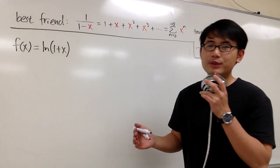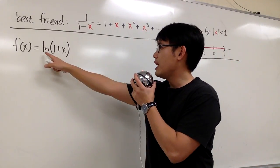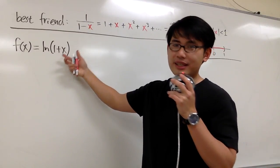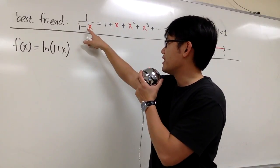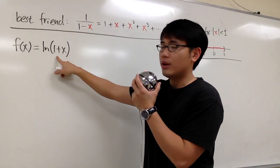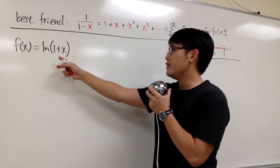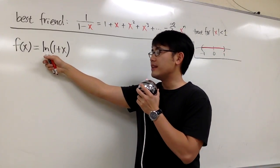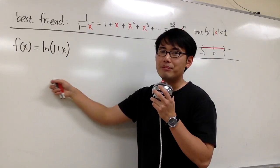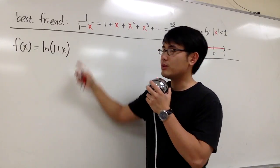Let's come up with a power series expansion for the function ln(1+x). The question is how can we make a connection with our best friend and ln(1+x)? Notice that if you differentiate this function, we end up with 1 over 1+x, which is very similar to our best friend.